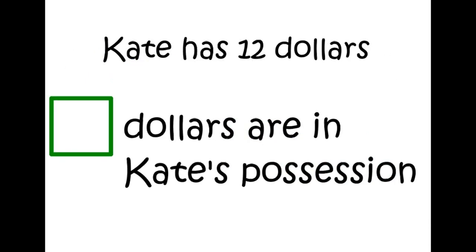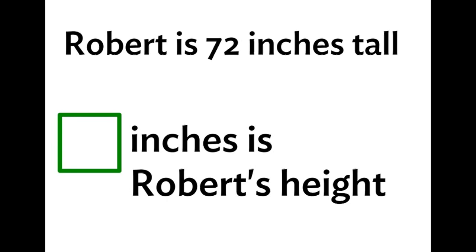Let's look at another really easy question. Kate has twelve dollars, so how many dollars are in Kate's possession? Well, all this is is actually just rearranging the way that we, or the location which we put the number, right? Kate has twelve dollars, we can also say that twelve dollars are in Kate's possession. They mean the same thing. The order doesn't really matter.